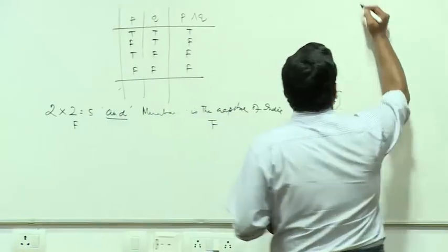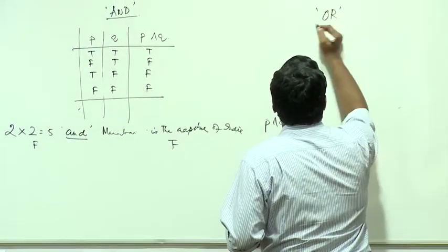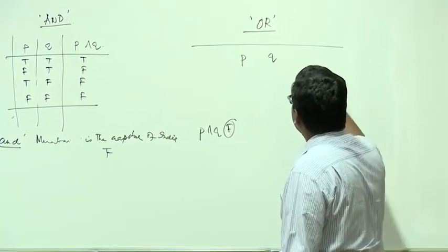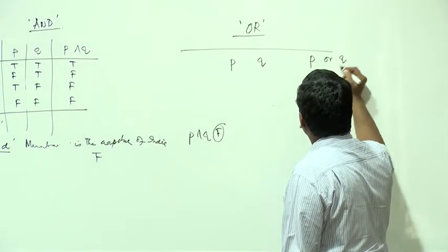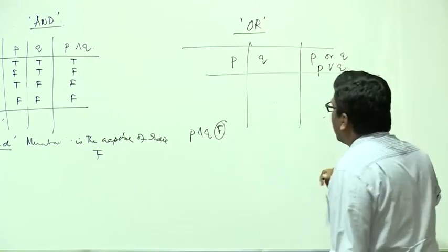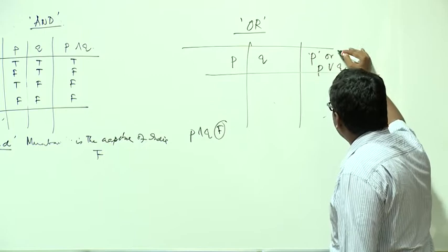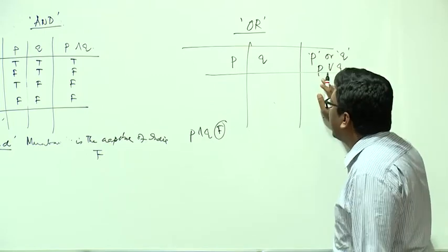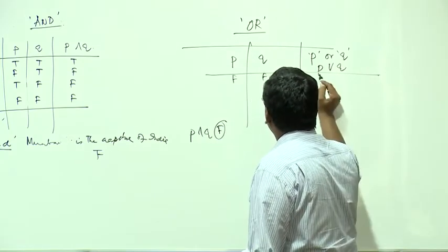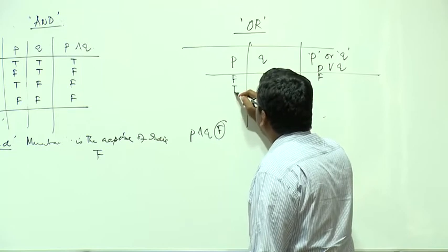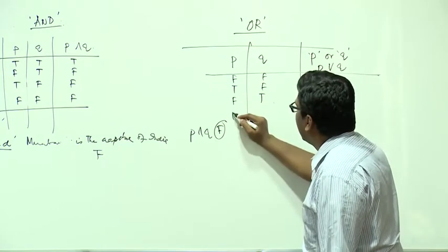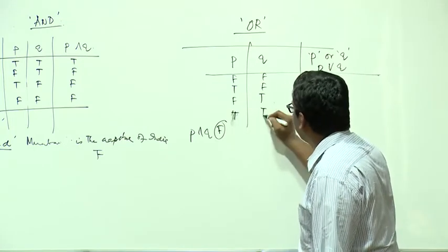Now let's look at the use of the word 'or.' Given sentences P and Q, the compound sentence 'P or Q' is called a disjunction. The disjunction is always true if at least one of the constituent sentences is true. It will be false only if both P and Q are false. If one of them is true, or if both of them are true, then 'P or Q' is true.